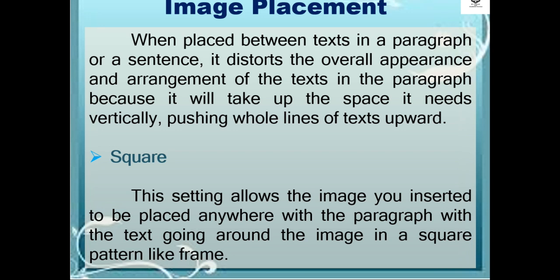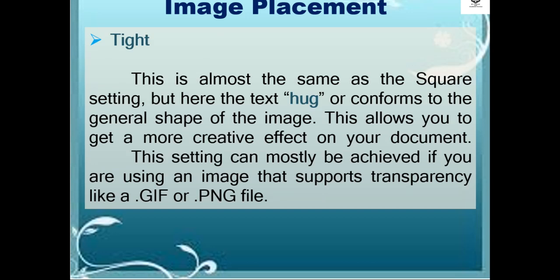Next is the square setting. This allows the inserted image to be placed anywhere within the paragraph, with the text going around the image in a square pattern like a frame. Another image placement is tight. This is almost the same as the square setting, but here the text hugs or conforms to the general shape of the image. This allows you to get a more creative effect on your document. This setting can mostly be achieved if you are using an image that supports transparency, like a .gif or .png file.